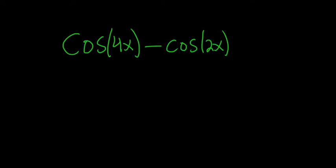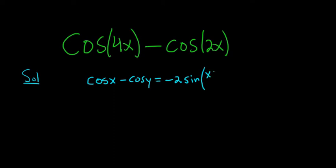Write as a product of trig functions. Solution. There's an identity you can use here whenever you're subtracting two cosines with different angles. The identity says if you have the cosine of x minus the cosine of y, this is equal to negative 2 sine of (x plus y) all over 2, and then sine of (x minus y) all over 2.